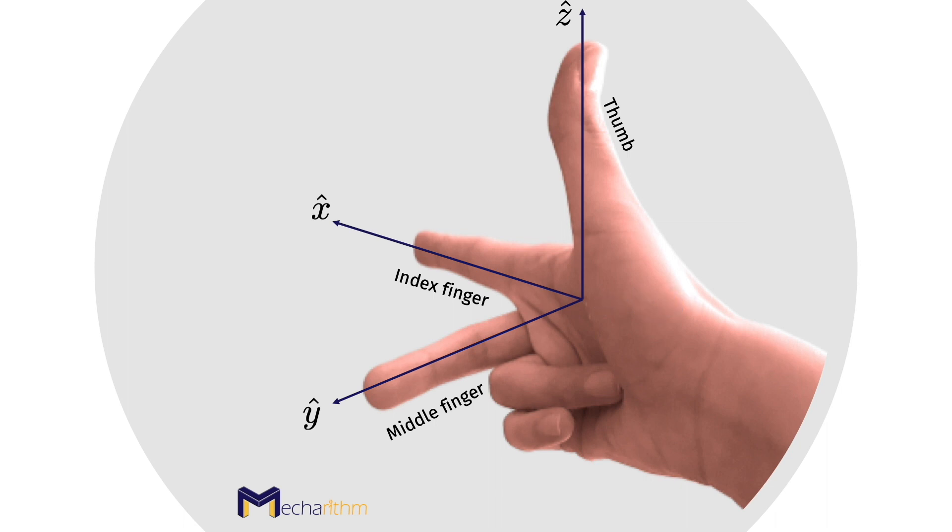And this means that the cross product of the x and y axes is z, and so on.